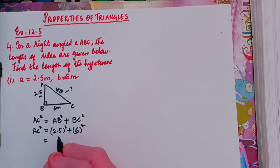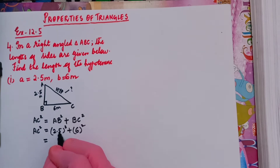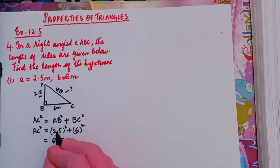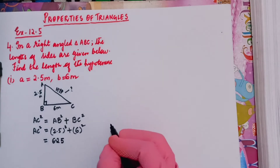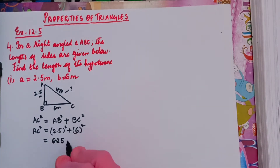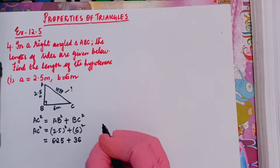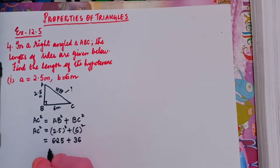To calculate 2.5 squared: ignore the decimal point to get 25 squared, which is 625. Then since 2.5 has one decimal place, 2.5 × 2.5 gives two decimal places total, so the result is 6.25. Plus 6 squared, which is 36. So 6.25 plus 36 gives 42.25.